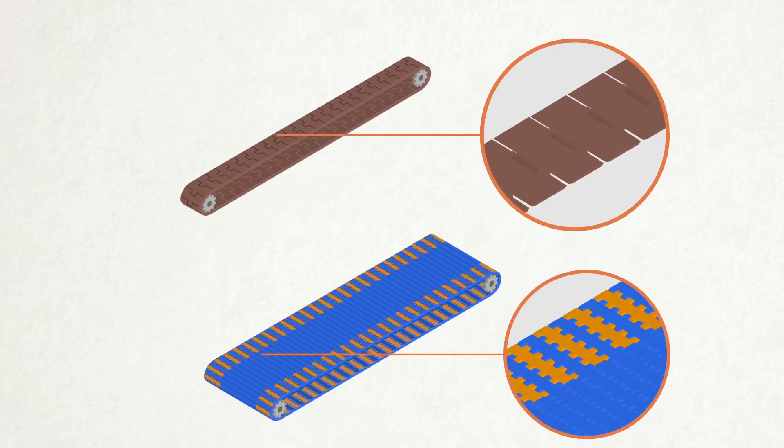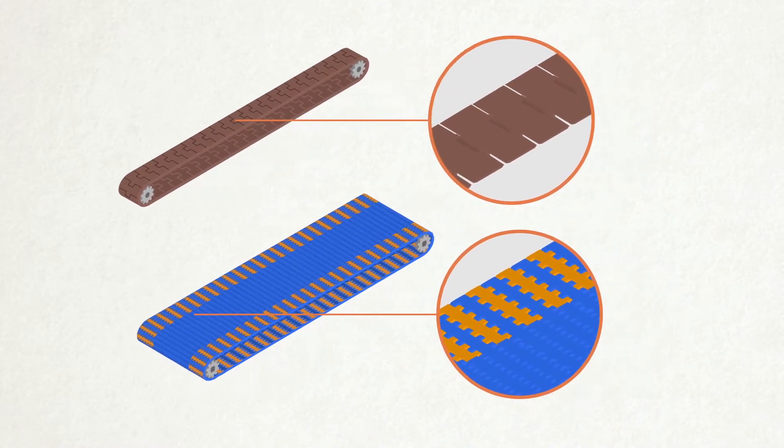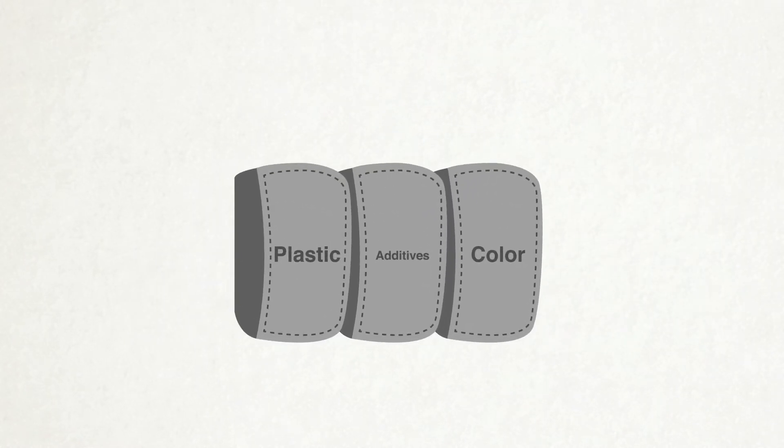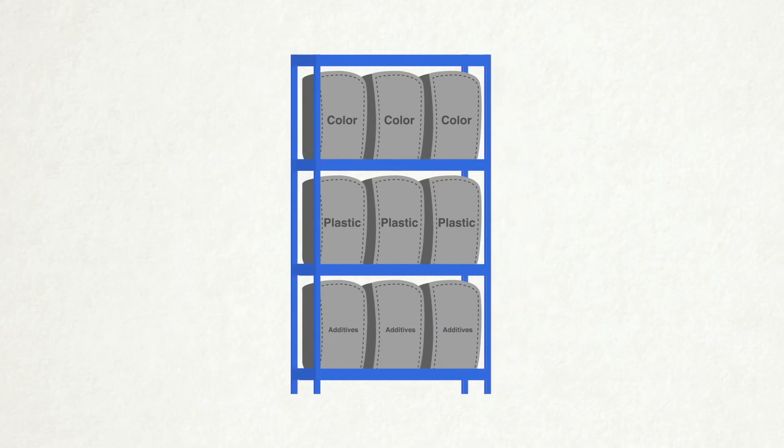The production of plastic modular belts and chains starts with the purchase of the raw materials. Modular belts and chains can be made of various types of plastic. After all the raw materials are delivered, they are stored until they are needed for mixing.